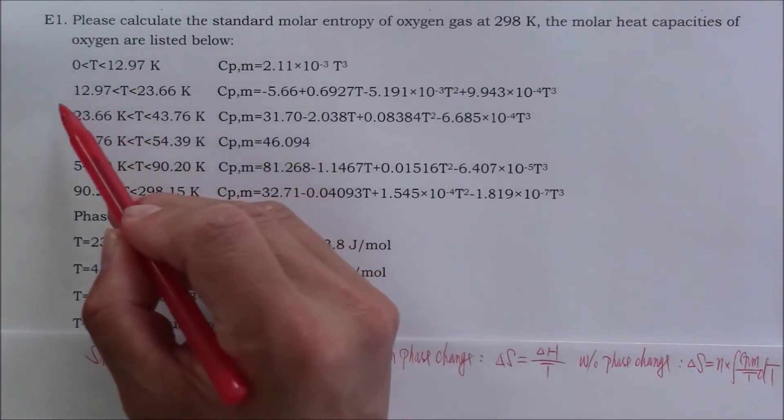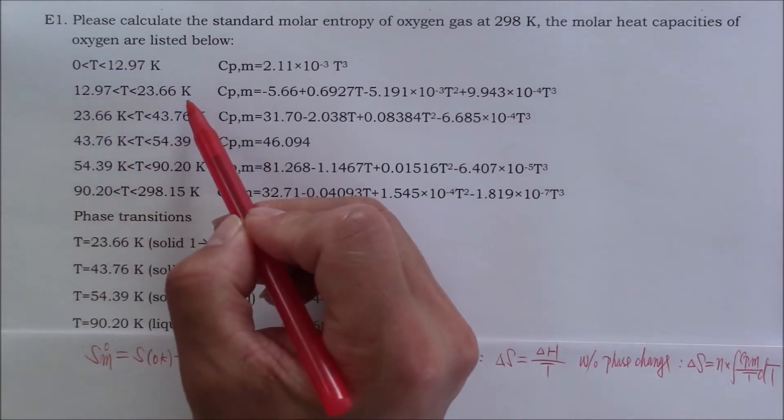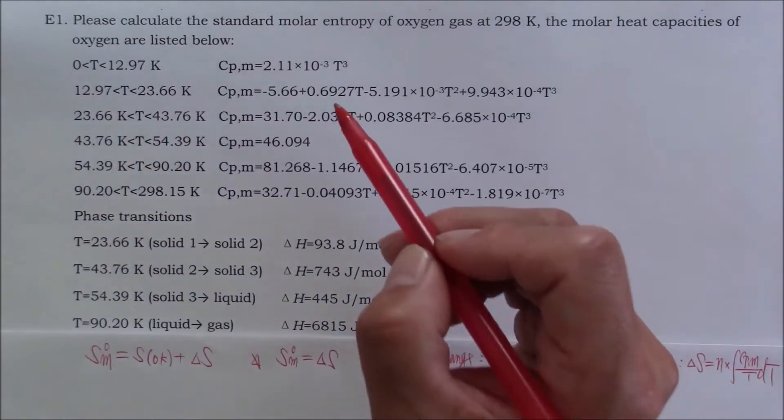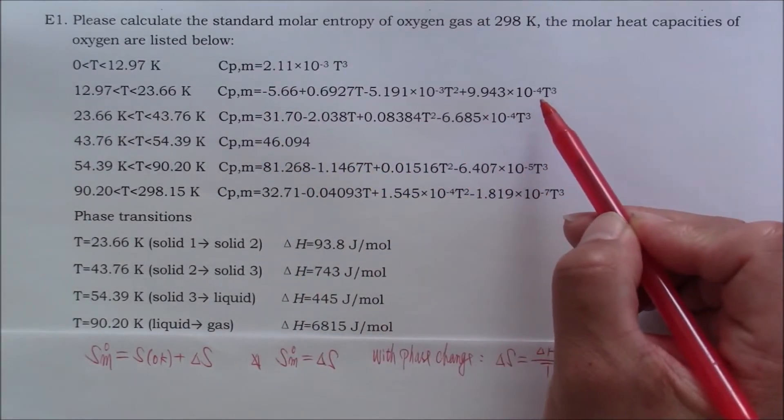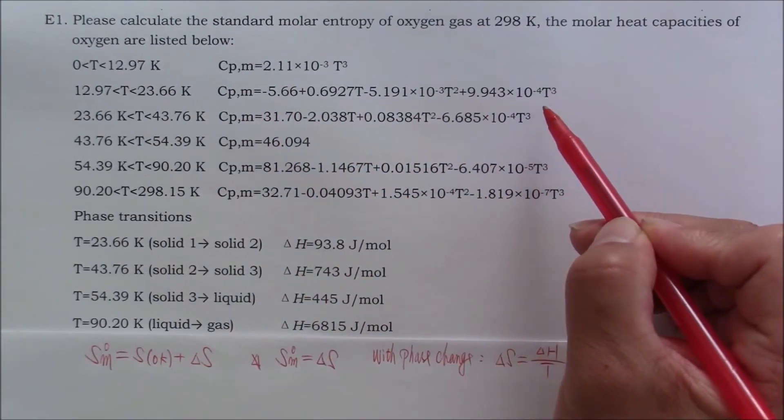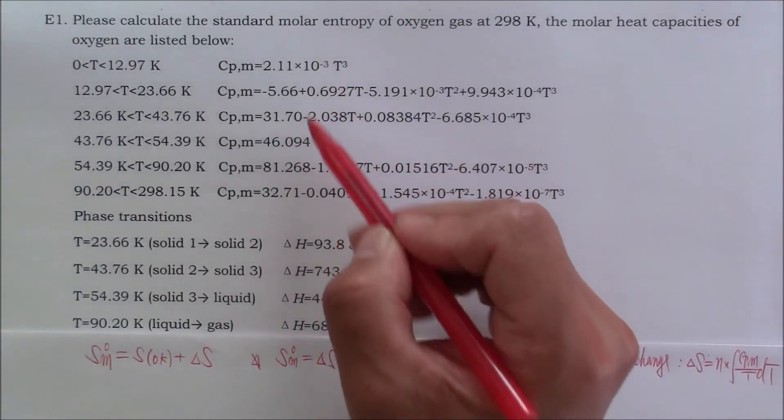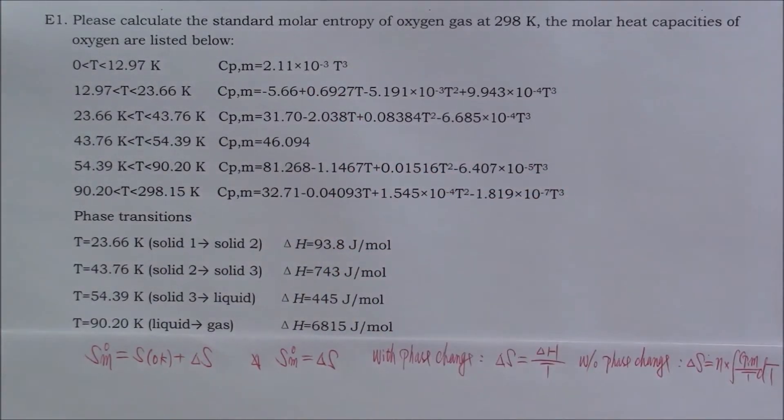Let me choose the second temperature range to show you how to calculate delta S. Because it has multiple terms. So, if you can do multiple term integrations, then you should be able to do a single term integration. Let me show you the work.